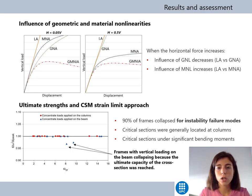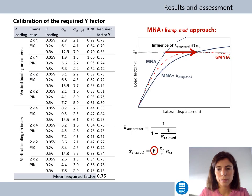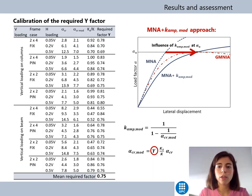For most frames, the ultimate load predicted by the GMNIA analysis occurred before the CSM strain limit was reached at the most critical section. Critical sections, normally located at the ends of the columns, were subjected to significant bending moments.